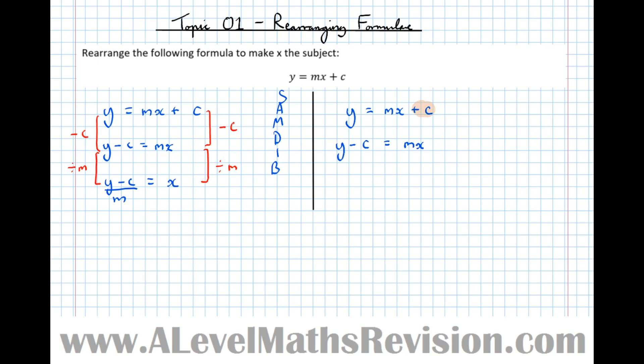Y minus C equals MX. We've unwrapped that outermost layer. The next thing wrapped around that X is this M, attached to the X by multiplication. So to unwrap that we're going to divide by M. Y minus C over M equals X. We've ended up with the same result by thinking about it a little bit differently. Both ways I think are good. For all intents and purposes both methods look the same on paper.